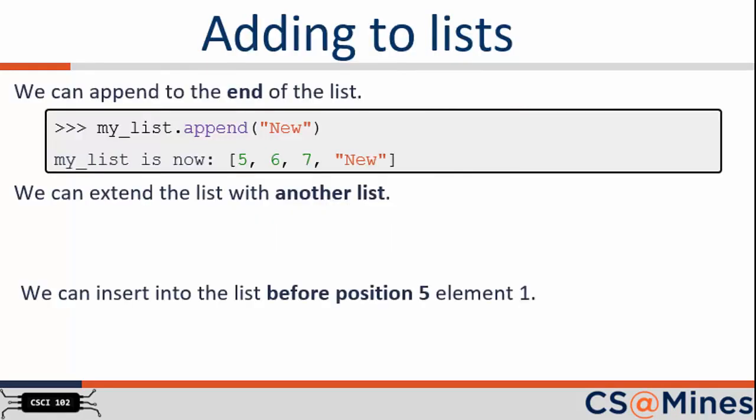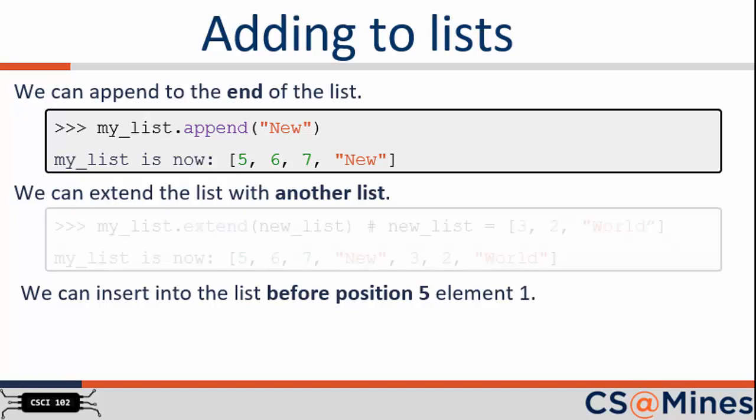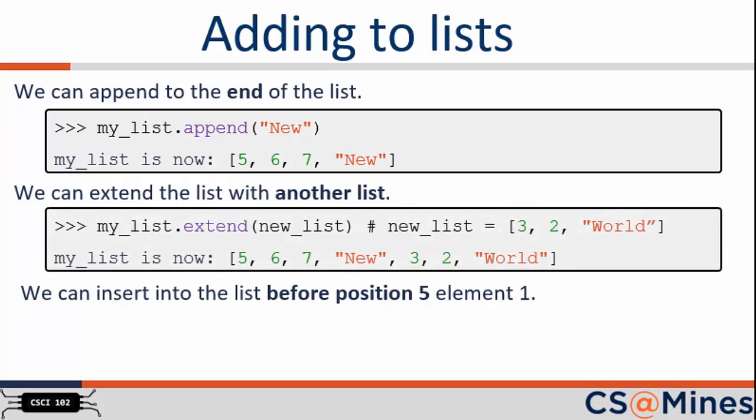Let's start with the functions that are available to you for adding elements to a list. First, we can append to the end of the list with the code example shown on the screen. Notice that the function append is called by using the dot operator with the myList variable. This append command then adds a string "new" to the end of your myList variable. We can also extend the list by adding another list. If newList has the elements 3, 2, and "world", then myList is now extended to include those 3 elements. Again, notice that the function extend is called by using the dot operator with the myList variable.